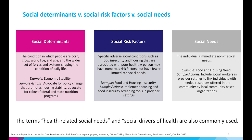Social risk factors are specific adverse social conditions such as food and housing insecurity that are associated with poor health. A person may have numerous risk factors but have fewer immediate social needs. Sample actions include implementing housing and food insecurity screening tools in provider settings. Social needs are the individual's immediate non-medical needs. An example is a food or housing need. Sample actions include integrating social workers in provider settings to link individuals with needed resources offered in the community by local community-based organizations. It's also worth noting that the terms health-related social needs and social drivers of health are commonly used. While healthcare organizations can help to screen for social risk factors and address unmet social needs, cross-sector collaboration is essential to tackle upstream social conditions and determinants.